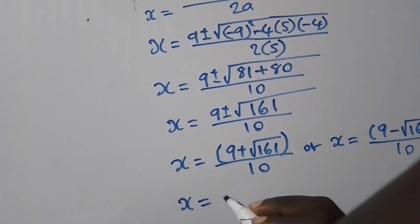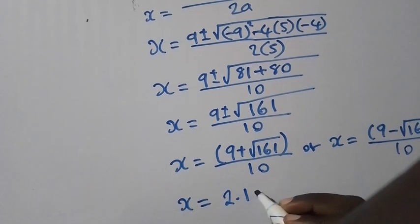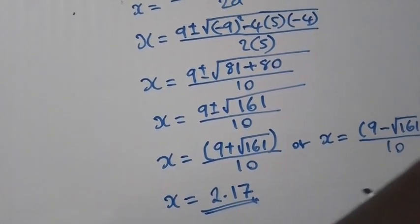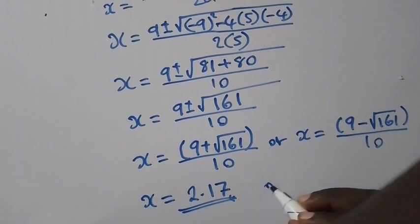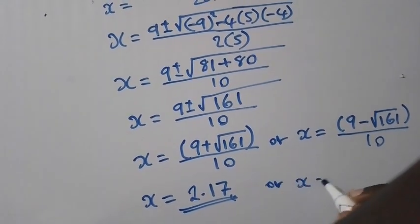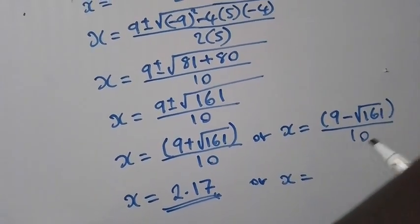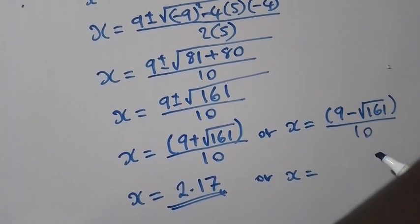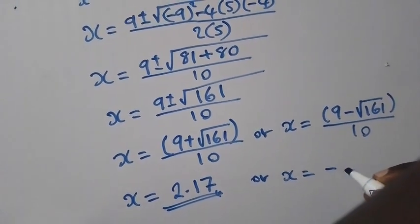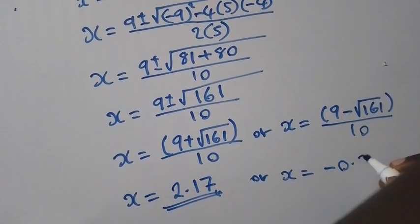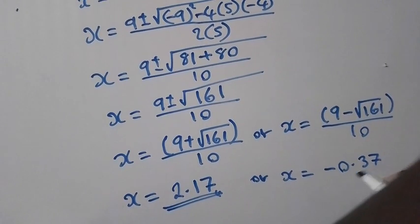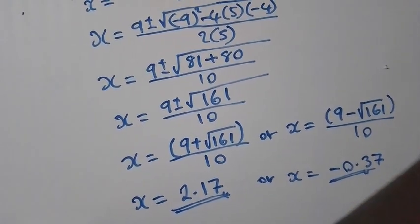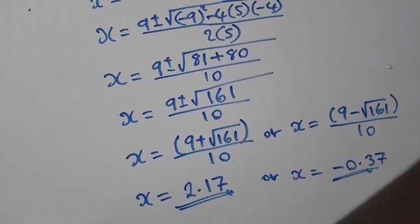Or x equal to, so if we punch this expression on the calculator, we are getting negative 0.37. So these are the zeros of x we have calculated.